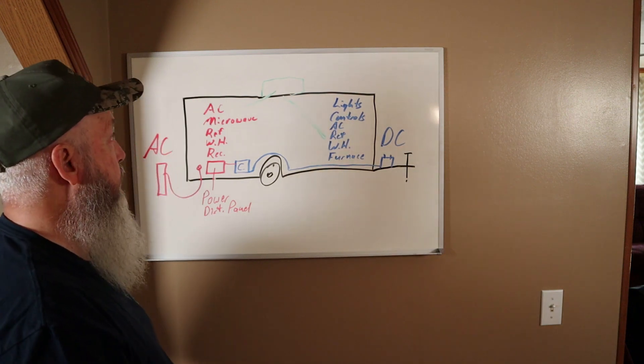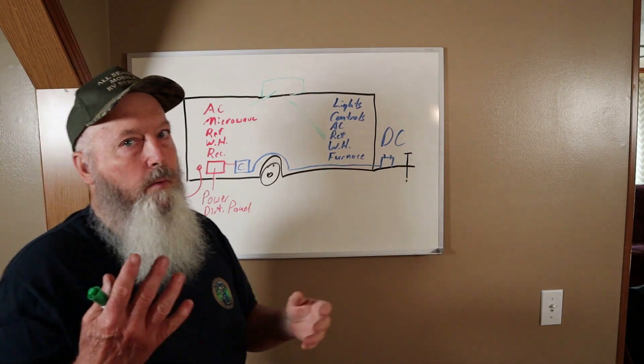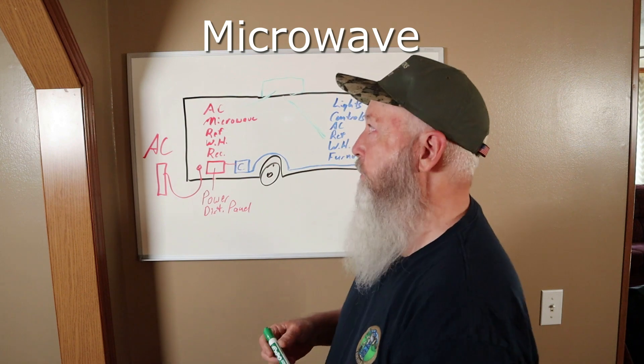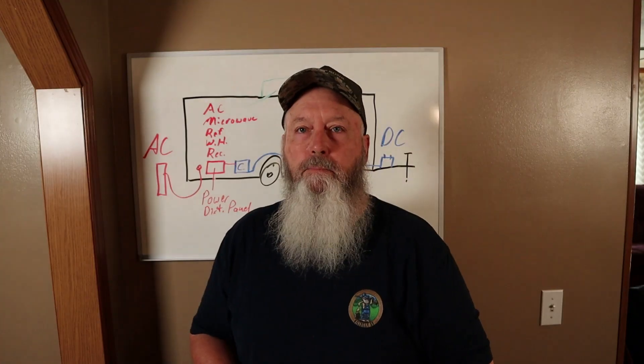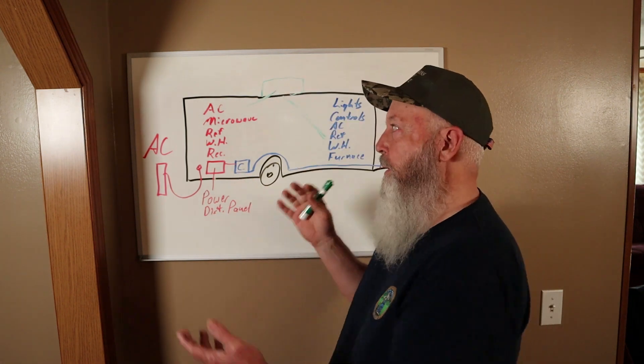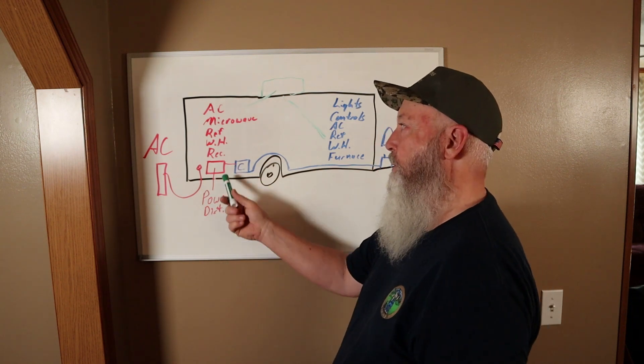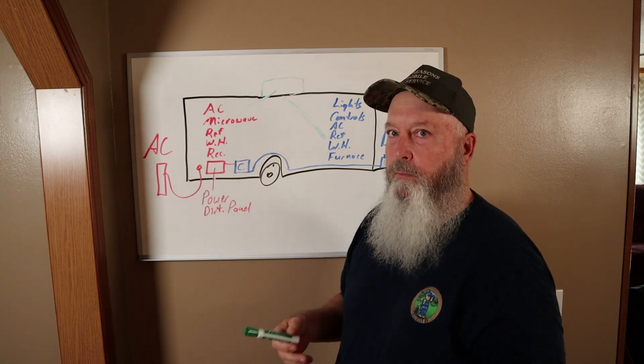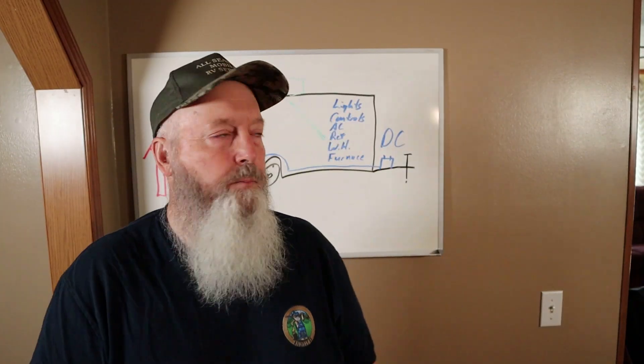So that's why you cannot use your air conditioner if you're dry camped and you only have a battery on the tongue. Everything else, the microwave, it has only the one source of power because they're just basically residential air conditioners. Is that clear as mud thus far? The only place that the two systems are really tied together are just at your converter, because your converter needs AC power to convert to DC to charge the battery.